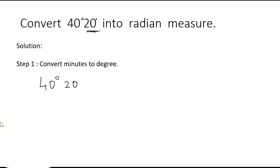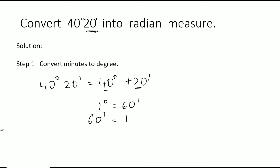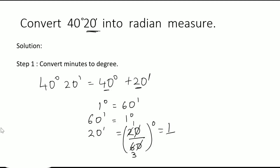40 degrees 20 minutes can be written as 40 degrees plus 20 minutes. We know that 1 degree equals 60 minutes, so 20 minutes equals 20 divided by 60 degrees. Cancelling, that gives us 1/3 degrees.